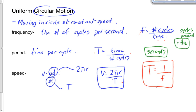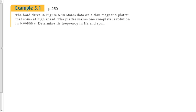Here's example 5.1 on page 250. A hard drive stores data on a thin magnetic platter that spins at high speed. The platter makes one complete revolution in 0.00833 seconds. Determine its frequency in hertz and in RPM.